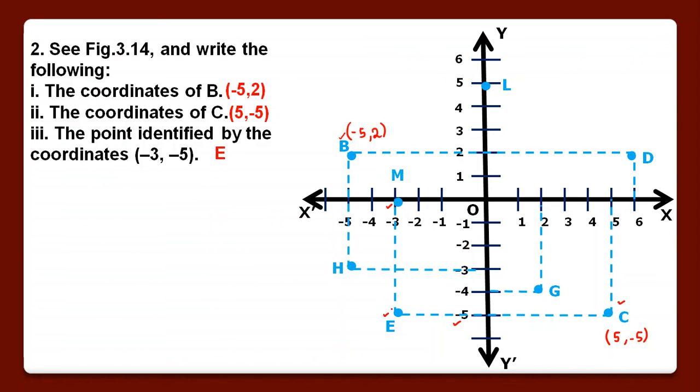Fourth is the point identified by the coordinates 2, minus 4. X hamara coordinate positive hai and y coordinate is negative means fourth quadrant. Point 2 is here, minus 4 is here. They both meet at point G, so G is the answer.